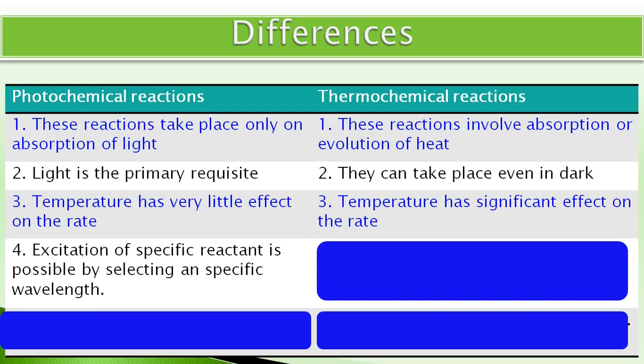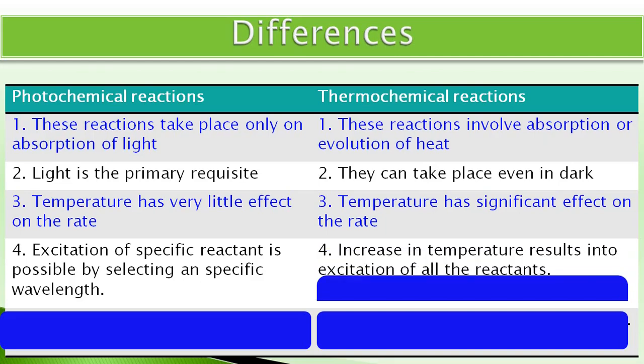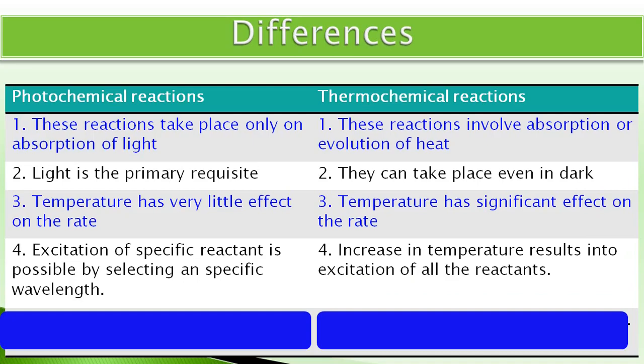Iske alawah, photochemical reactions me, dho ya dho se adhik reactants honne par, kishi vises reactant ko excite karna sambhau hai, jabki, baqi reactants ko viesse hi rakhha ja sakti hai. Jabki, thermochemical reactions me, jab bhi heat supply ki aati hai, ya temperature bada hai jata hai, toh jitne bhi reactant hootate hai, woh saman roope se excite hootate hai. Ya dousaray sabdho mein kehen, thermochemical reactions me, selection of specific reactant for excitation is not possible, which is possible in photochemical reactions.